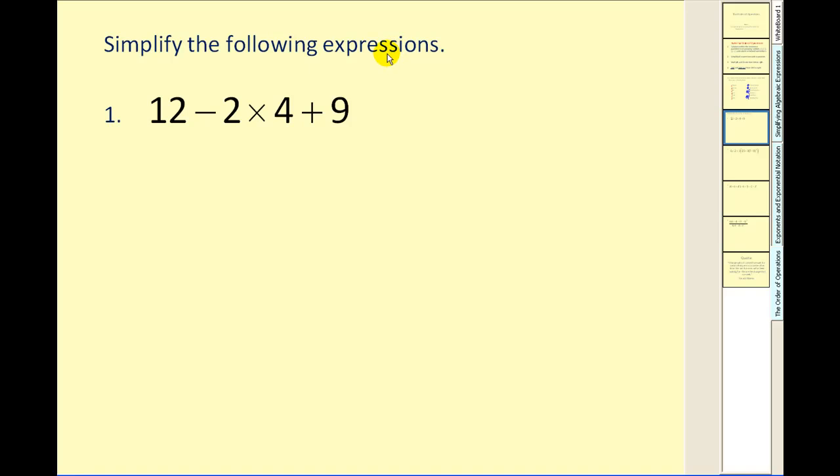Simplify the following expression. It's very tempting to work this from left to right, but first there are no parentheses, second there are no exponents. So step three is multiply and divide. We have to perform this multiplication before we add and subtract. Twelve minus two times four—of course that's eight—plus nine. Now subtraction and addition have the same priority, so you work from left to right. Twelve minus eight gives us four, plus nine equals thirteen.